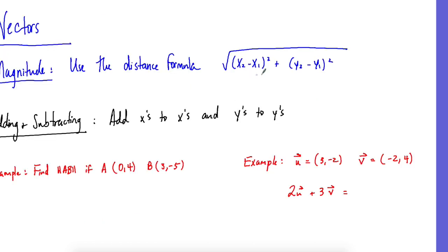Vectors. Magnitude is the distance formula: X2 minus X1 squared plus Y2 minus Y1 squared. Take the square root of that, that gives you the magnitude. Adding and subtracting, add your X's to X's, add your Y's to Y's.